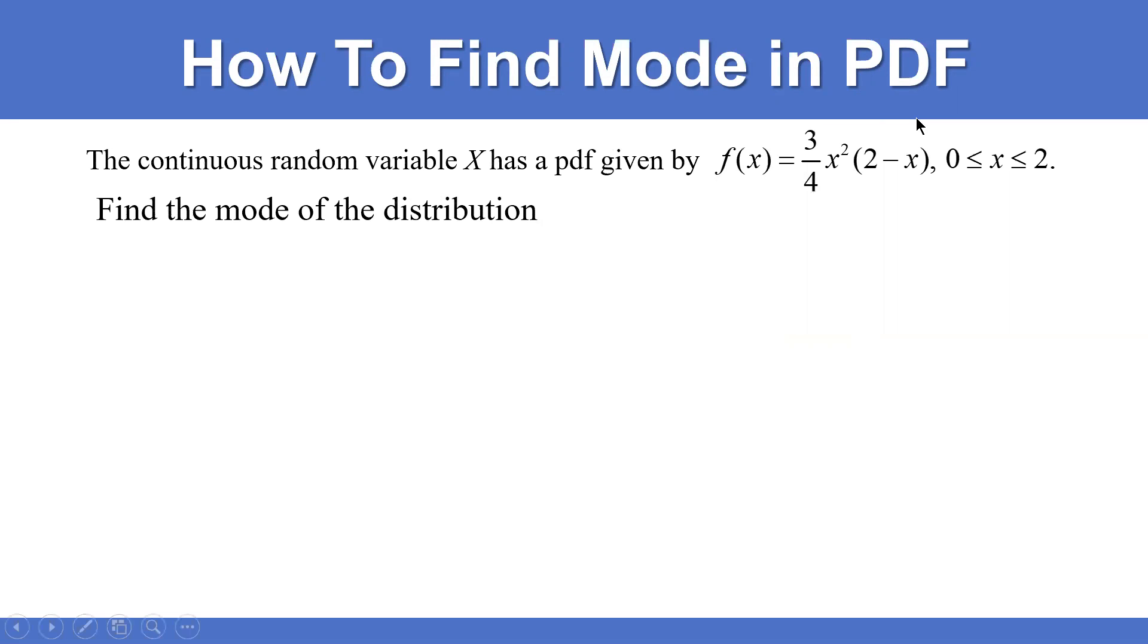The continuous random variable X has a PDF given by f(x) = (3/4)x²(2-x), 0 ≤ x ≤ 2. Find the mode of the distribution.